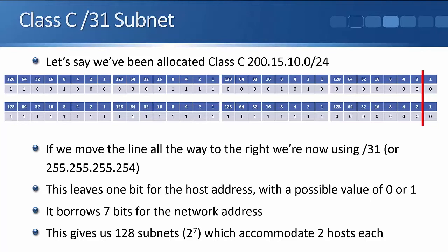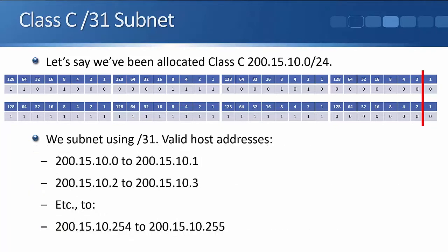That leaves one bit for the host address, which has a possible value of 1 or 0. So a Class C /31 borrows 7 bits for the network address from the host address. That gives us 128 subnets - 2 to the power of 7: 2, 4, 8, 16, 32, 64, 128 - and that accommodates two hosts each. So with a /31, the valid host addresses would be 200.15.10.0 to .1, 200.15.10.2 to .3, 200.15.10.4 to .5, and so on.